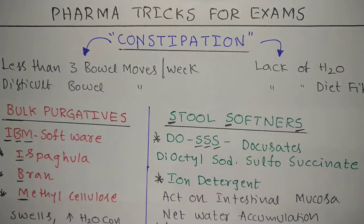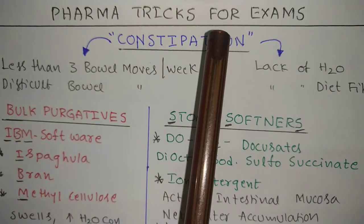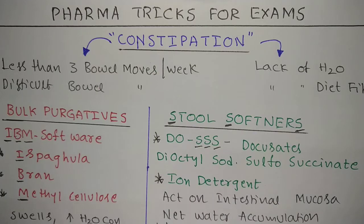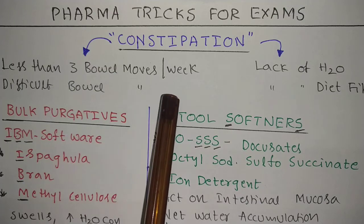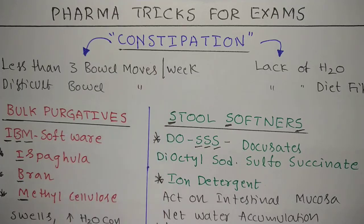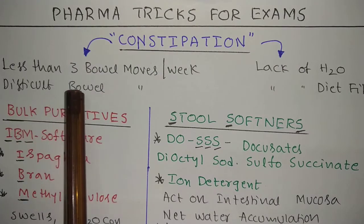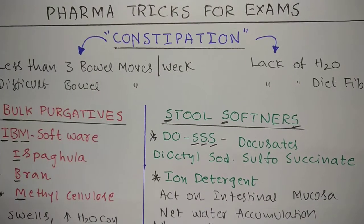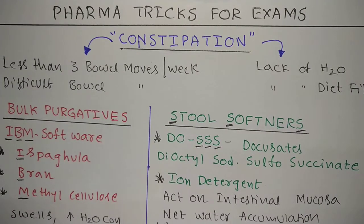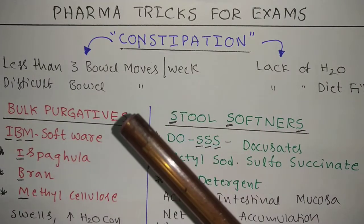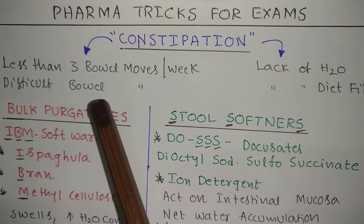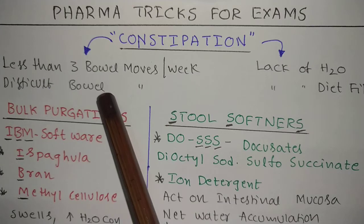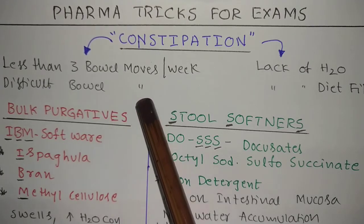Welcome to the YouTube channel Matrix for Exams. Today we will see a very simple and very common topic: constipation and how to give treatment for constipation. Constipation means less than three bowel movements per week, or difficult bowel movements — both are called constipation.